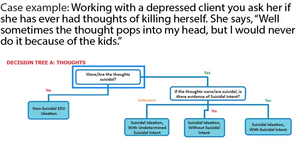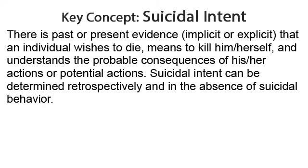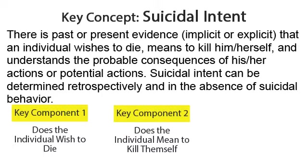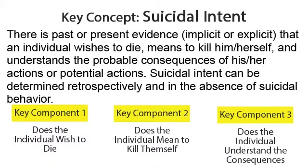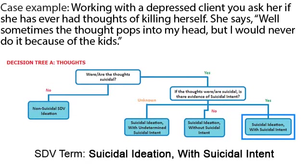Next, you would ask yourself: were or are the thoughts suicidal? In this case, the answer is yes. Then you ask, if the thoughts are suicidal, is there evidence of suicidal intent? The definition of suicidal intent is: there's past or present evidence, explicit or implicit, that an individual wishes to die, means to kill him or herself, and understands the probable consequences of his or her actions or potential actions. Suicidal intent can be determined retrospectively and in the absence of suicidal behavior. Back to the case vignette — she does have thoughts of killing herself, but she says, 'I would never do it.' So the correct term is suicidal ideation without suicidal intent.